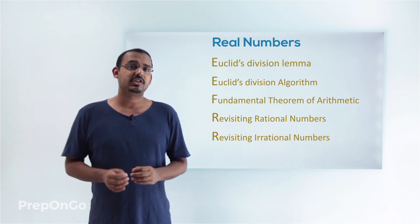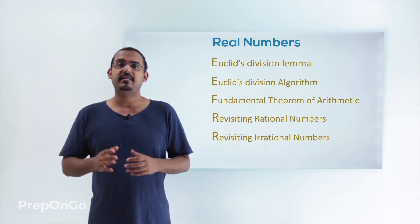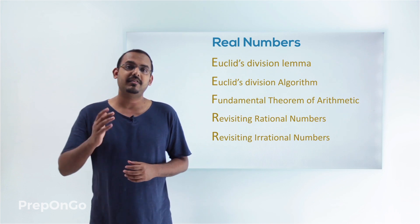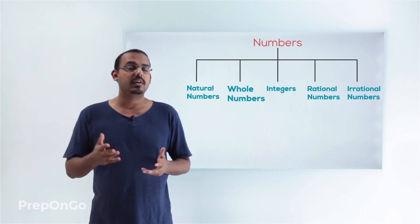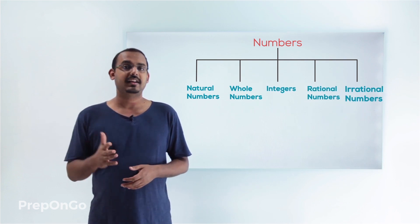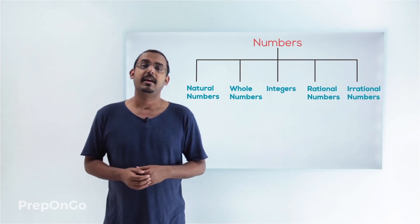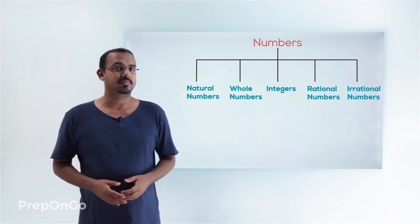But before jumping into this chapter, let's recall some of the basic concepts that we have studied in our previous classes. We have seen that there are multiple categories in which we have put different numbers — natural numbers, whole numbers, integers, rational numbers, and irrational numbers. Let's have a look at what all these categories actually represent.